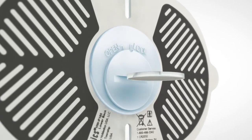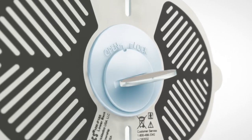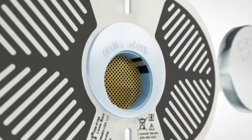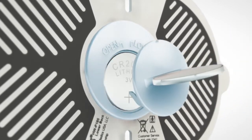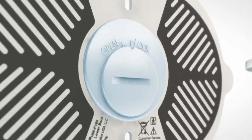Use a coin or flat-headed object to turn the battery cover to the open position. Remove the cover and insert the battery provided. Replace the cover and turn it back to the lock position.